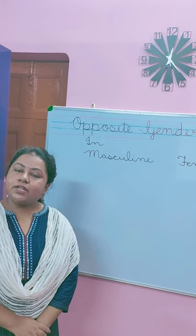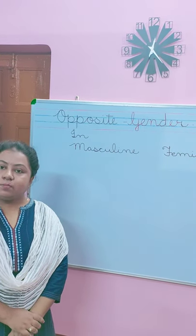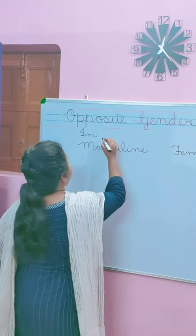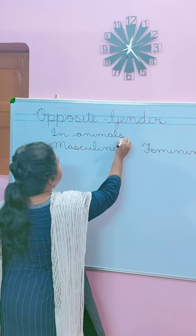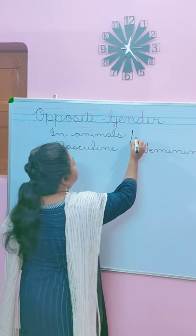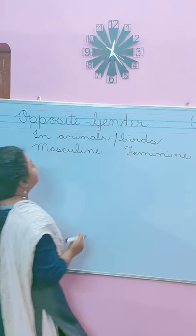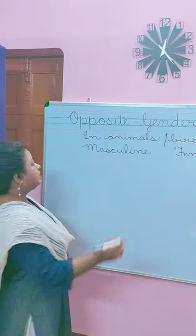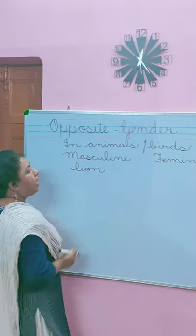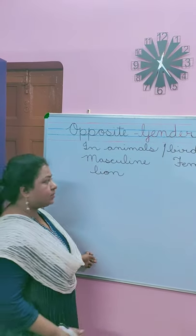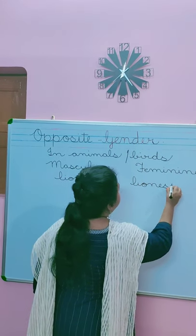Now I will teach you some opposite gender in animals or birds — A-N-I-M-A-L-S or birds, B-I-R-D-S. So masculine — lion, L-I-O-N — and feminine will be lioness, L-I-O-N-E-S-S.